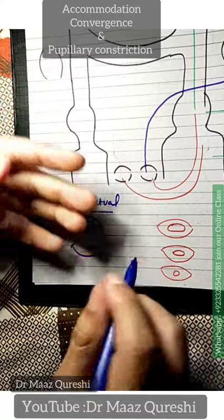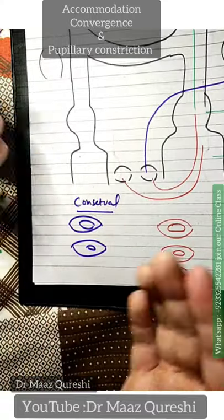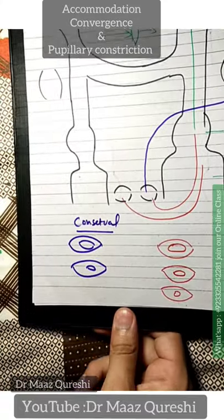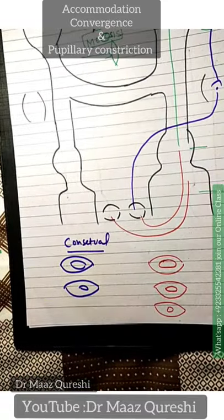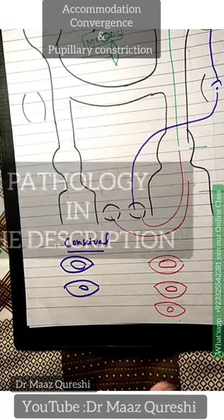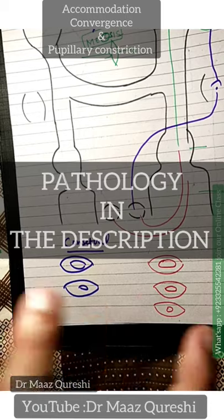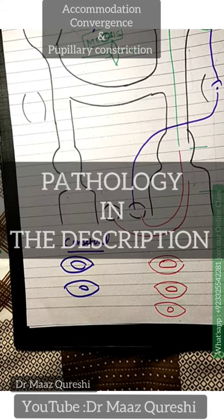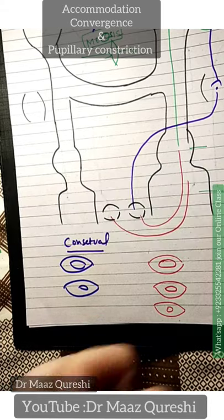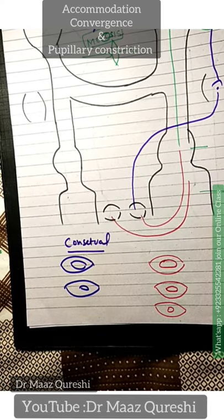This is your basic anatomy and physiology. Now we will talk about pathology — Argyle Robertson syndrome, Horner syndrome, Marcus Gunn pupil and more — in the next steps.